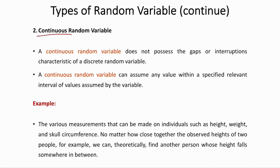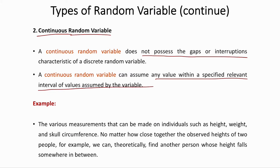A continuous random variable is one that has no gaps or interruptions and can assume any value within a specific relevant interval. Examples include a person's height, weight, skull circumference, diastolic blood pressure, and heart rate. These are always present, cannot be predicted at any given point in time, and are always changing — making them continuous random variables.